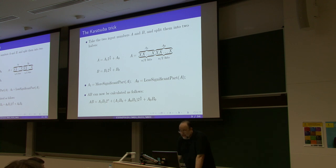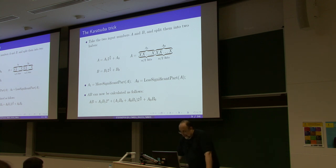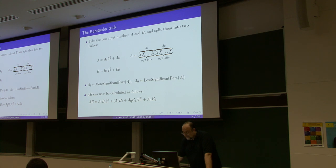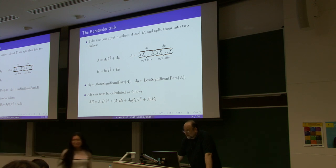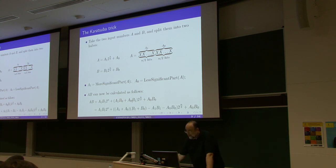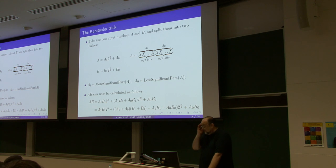What Karatsuba realized is that to multiply a and b you only need three quantities: a₁b₁, a₀b₀, and the cross term a₁b₀ + a₀b₁ — but not the individual factors separately. And of course this cross term can be computed with only one additional multiplication using a clever trick.